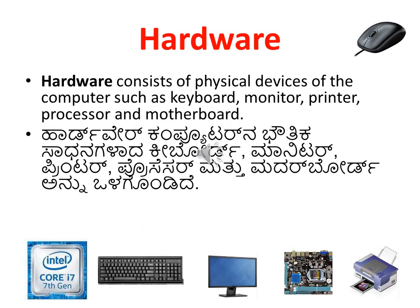Hardware consists of the physical devices of the computer such as keyboard, monitor, printer, processor, and motherboard. These are the physical devices you can see and touch — you may have already seen the keyboard, monitor, and printer; the processor and motherboard you may see later.